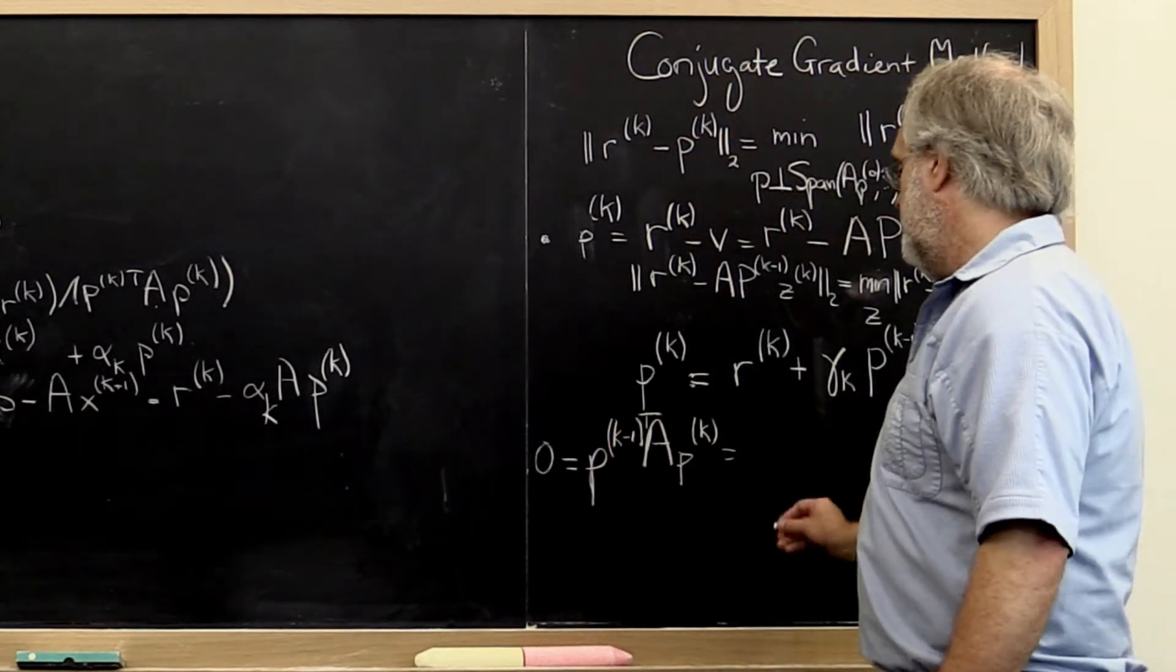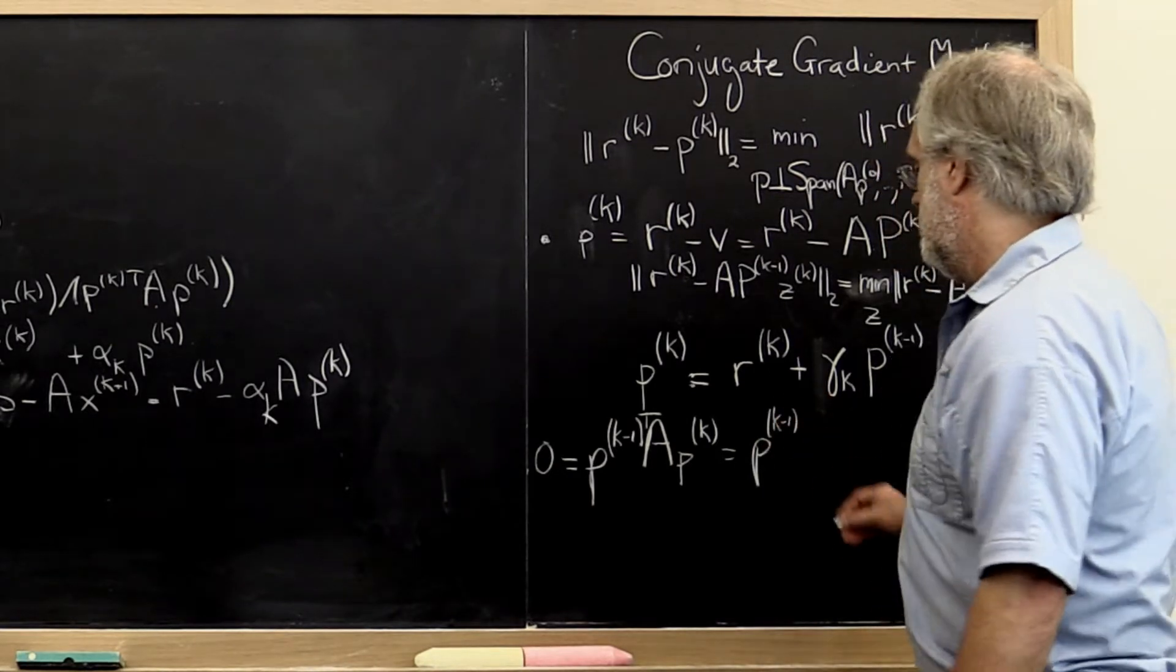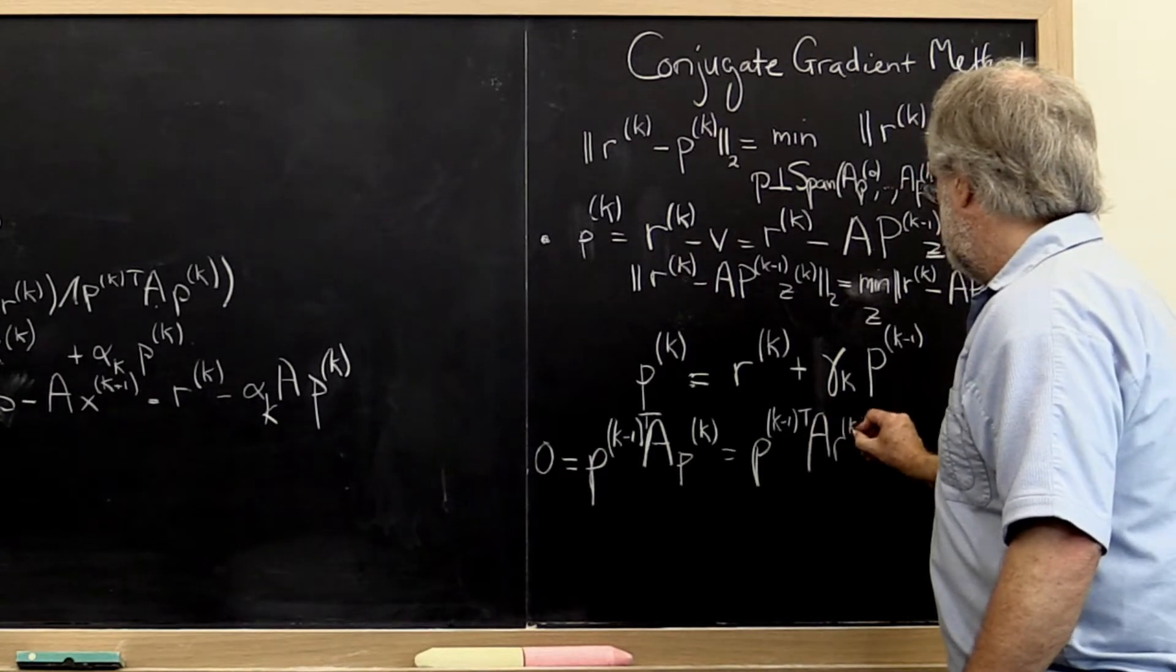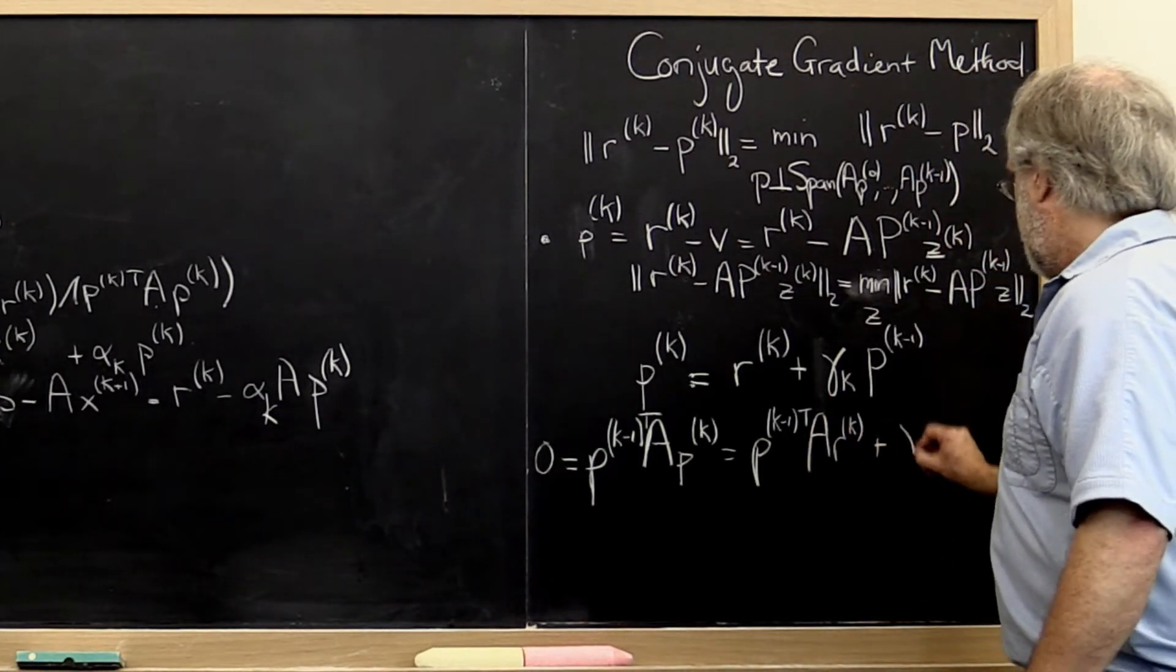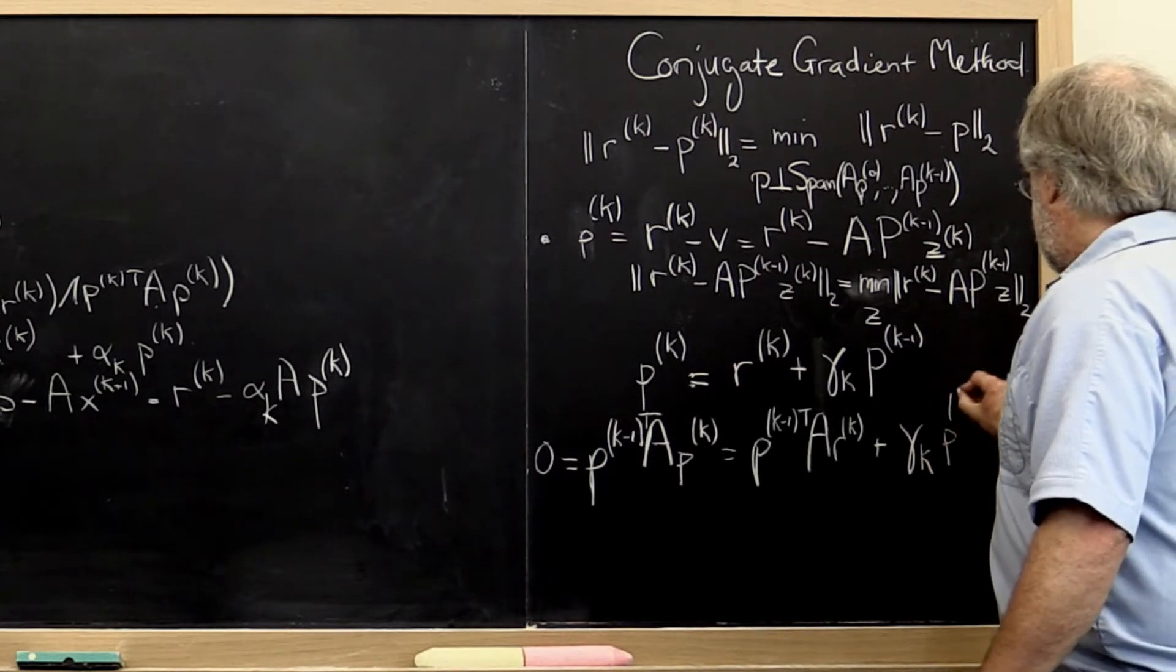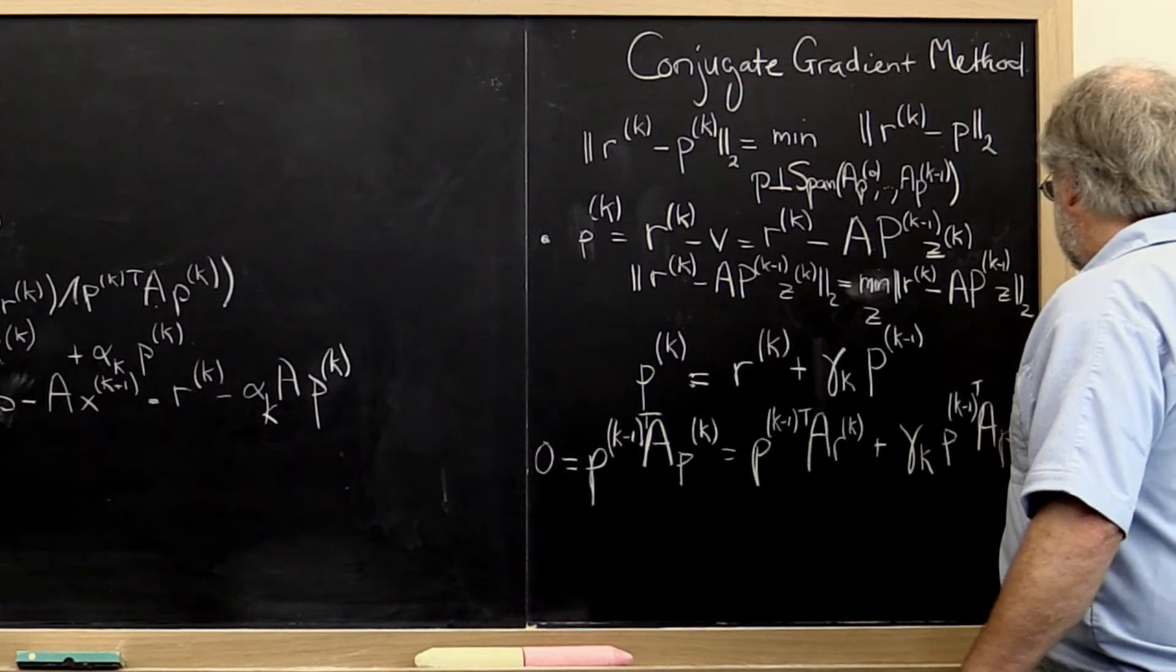But what that means is that that's equal to p_{k-1} transpose A times the residual plus gamma_k times p_{k-1} transpose A p_{k-1}.